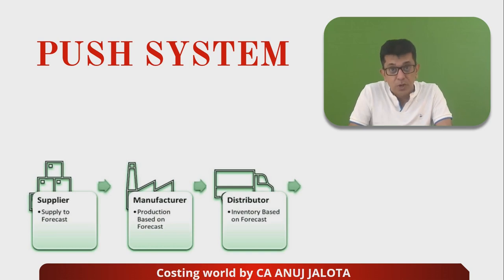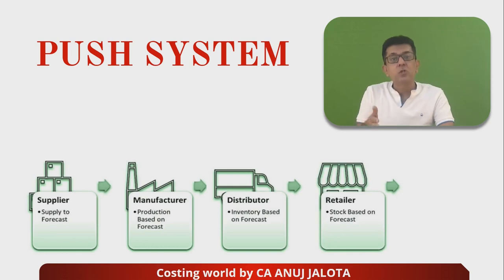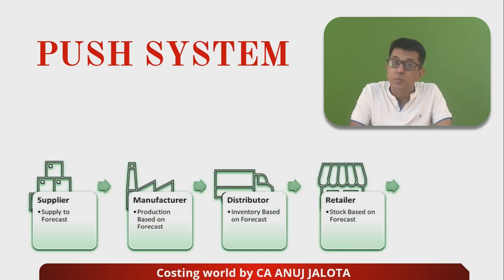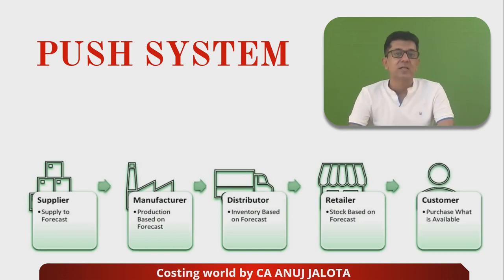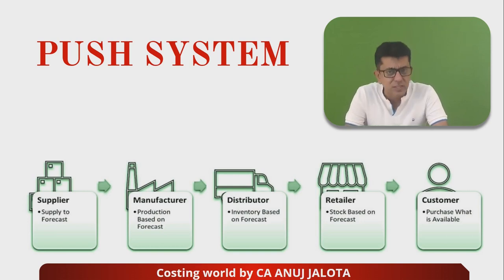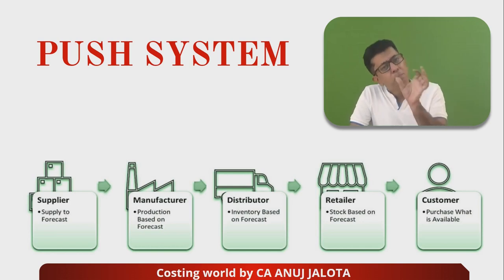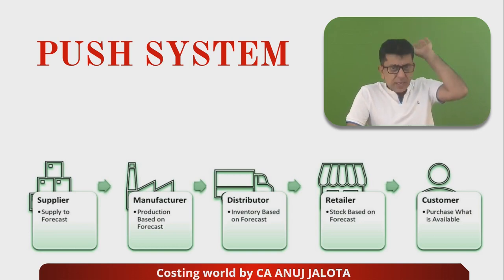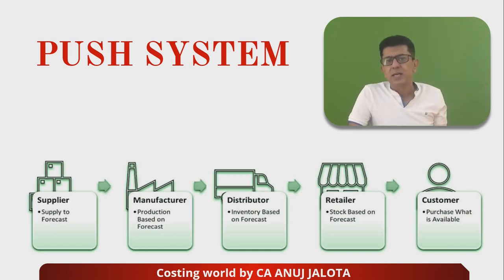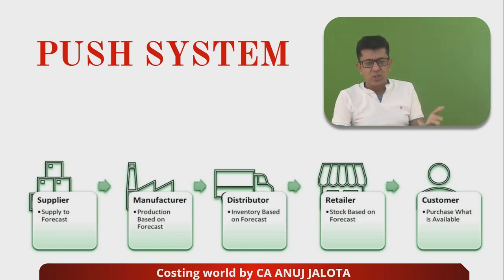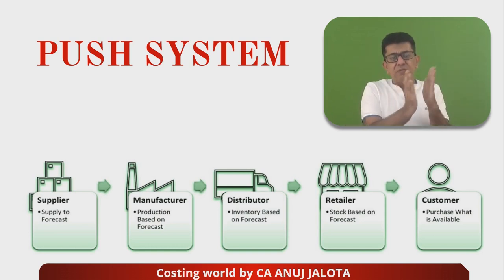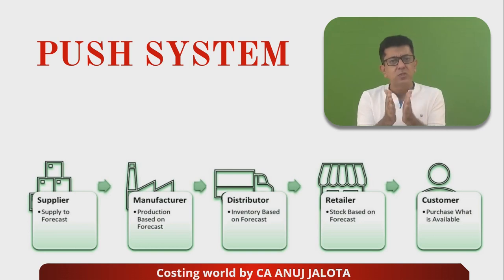Push system should be followed wherever it is easy for you to forecast the demand. When you produce, you sell the goods to distributors, who also keep their own stock because retailers can demand that stock at any moment. Retailers also keep stock because they don't know when the consumer will be coming. The customer will purchase whatever stock is available. Apple is a perfect example of a push system — in the USA the CEO and the entire team forecast demand and decide how much to produce, requiring processors, glass, chips, and many other components.